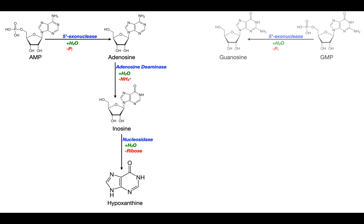Over here we have the G's. Similar to AMP, we've got GMP — guanosine monophosphate. Again, 5' exonuclease is going to trim off this phosphate with water in a hydrolysis reaction, and that leaves us with guanosine.